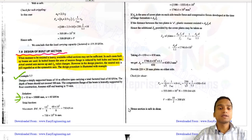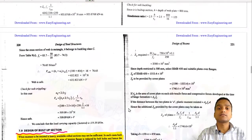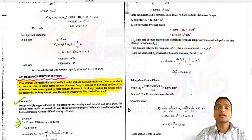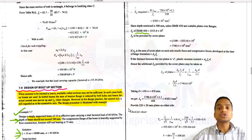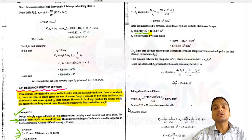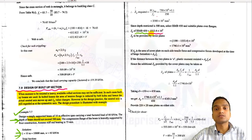In this example problem, it is asked to design a simply supported beam of 10 meter effective span carrying a total factored load of 60 kN/m, with depth not exceeding 500 mm, and the compression flange laterally supported by floor construction — so it's a case of laterally supported beams. We go for a trial section by calculating the bending moment first, then the required Z_p value, and choose ISMB 450 since depth shall not exceed 500 mm. However, the Z_p value of ISMB 450 is less than the required Z_p.